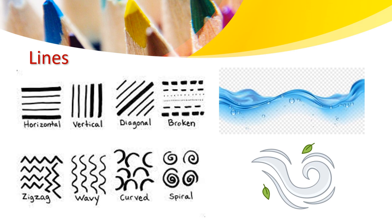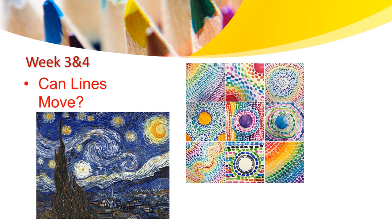We will learn about how lines in an artwork can make movement. During this week, we will be exposed to the artist Van Gogh. He is a German artist. If you look at the left, this is one of his artworks. The previous weeks, we talked about something — what do you remember we were talking about? Yes, we were talking about lines. Can lines move? Do you think lines can move?